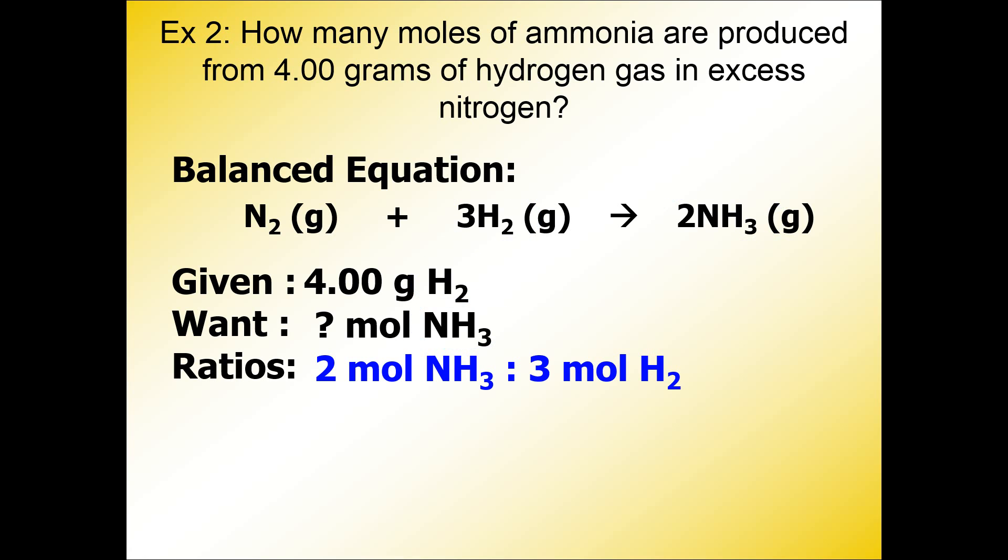Now, as I look for more ratios, I'm going to look for clues in the given and the want. The clues are in the units and in the substance. I already found one clue whenever there are two different substances, but your second clue is whenever you see the unit of mass. Grams is in the given, and because grams is next to H2, that's a clue to tell you we need the molar mass of hydrogen gas.